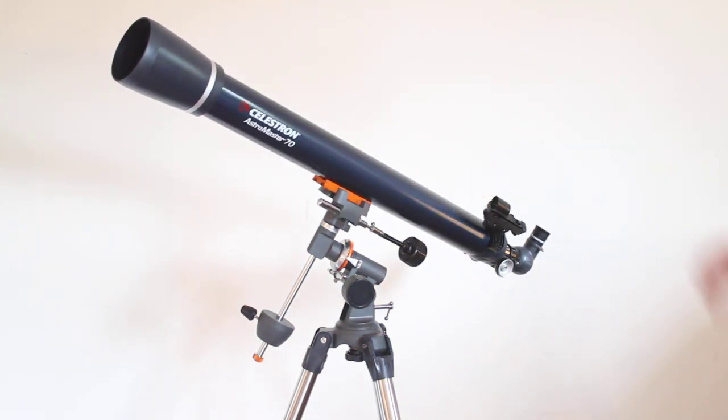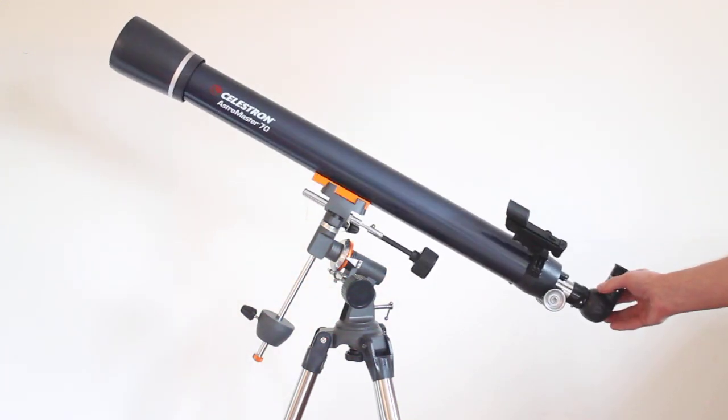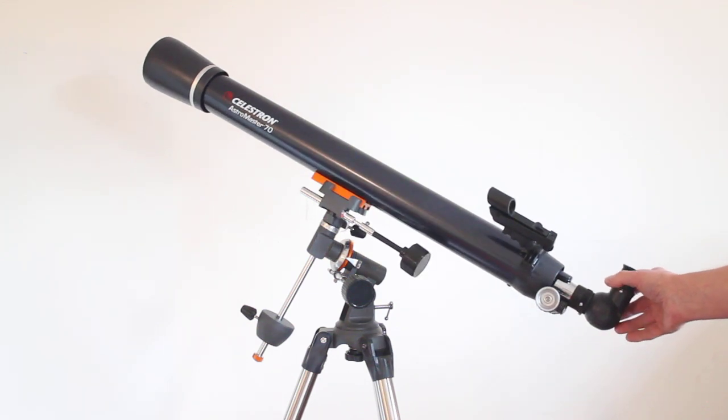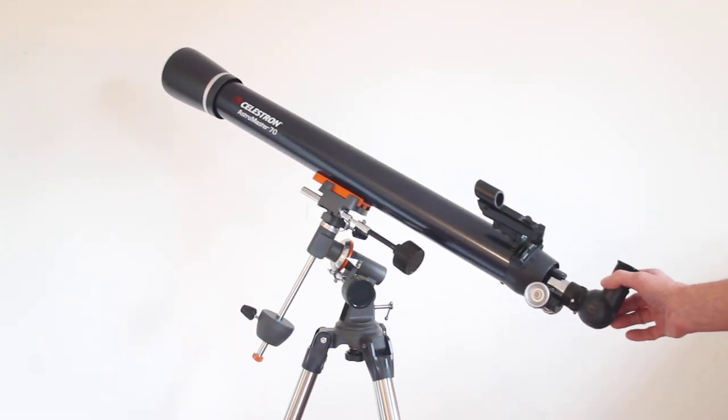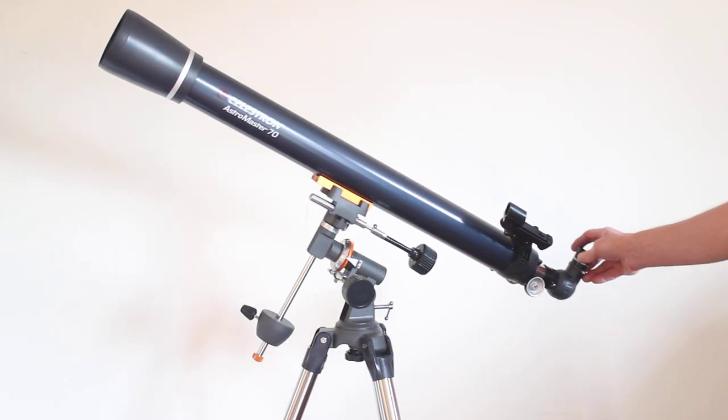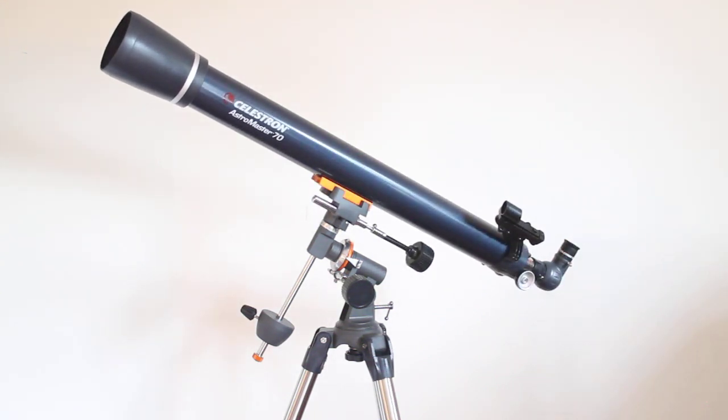Saturn, you will see the rings around Saturn and three, four, maybe five of its brightest moons. Mars is a bit more of a tricky target. You might just see some subtle detail such as the polar ice caps, but only when it's at its closest point. Uranus, you might just see it as a small bluey-green disc.